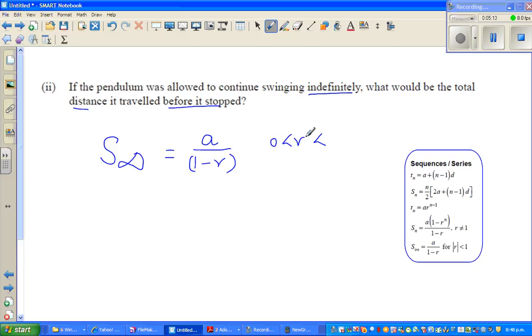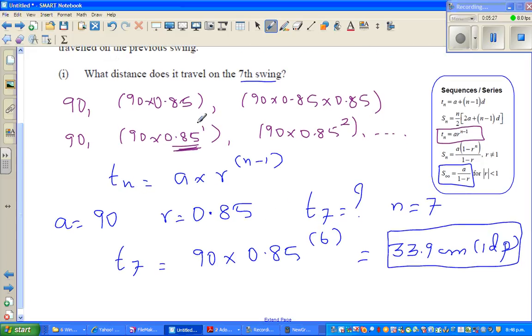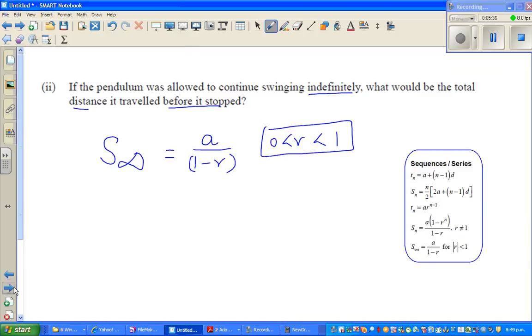Whenever a sequence is increasing indefinitely or decreasing indefinitely, you can use this formula. There will be a total which will not go beyond a certain number. The total distance cannot go beyond a certain number. That's where you use this formula.